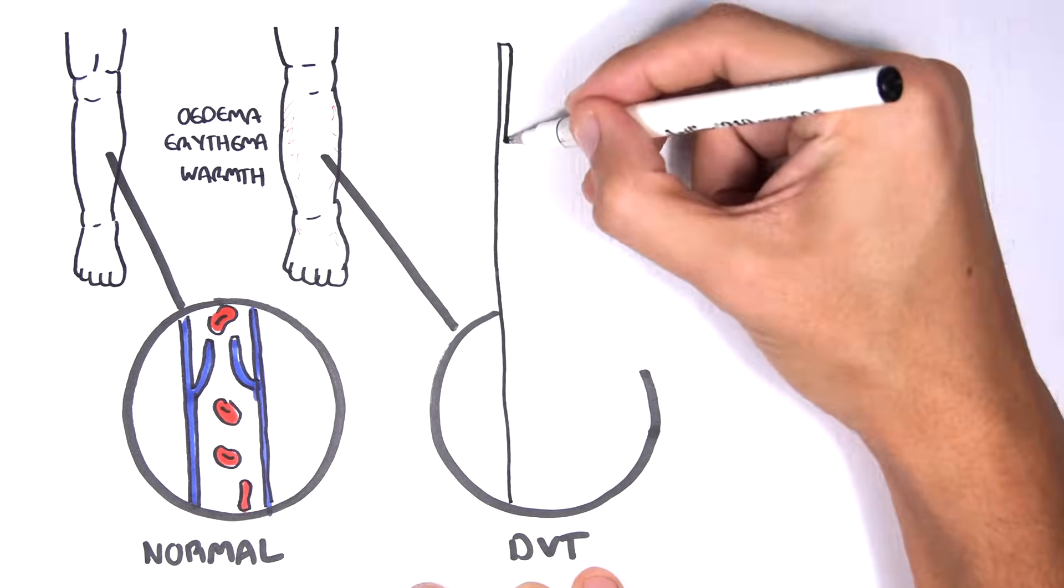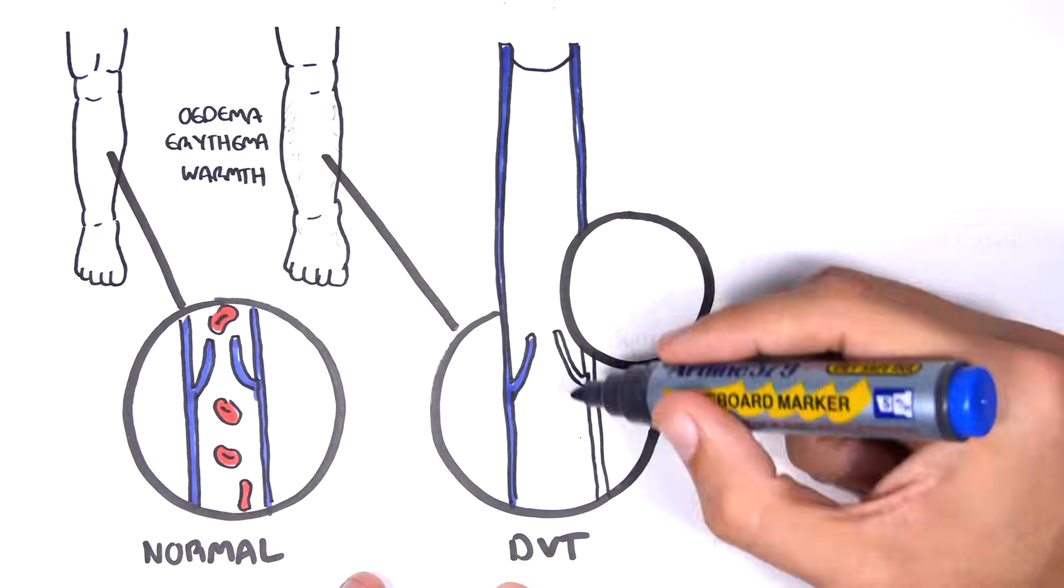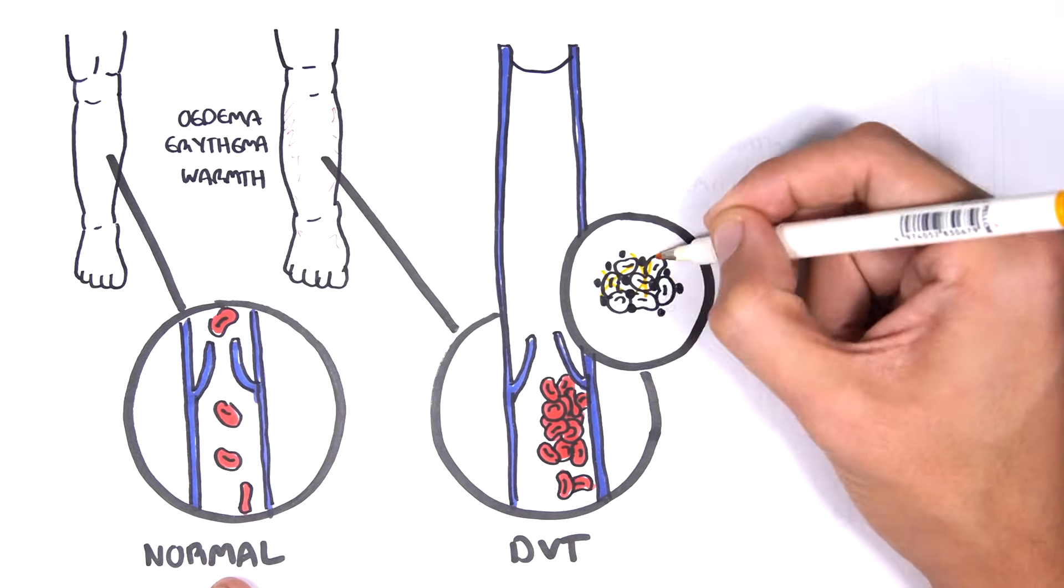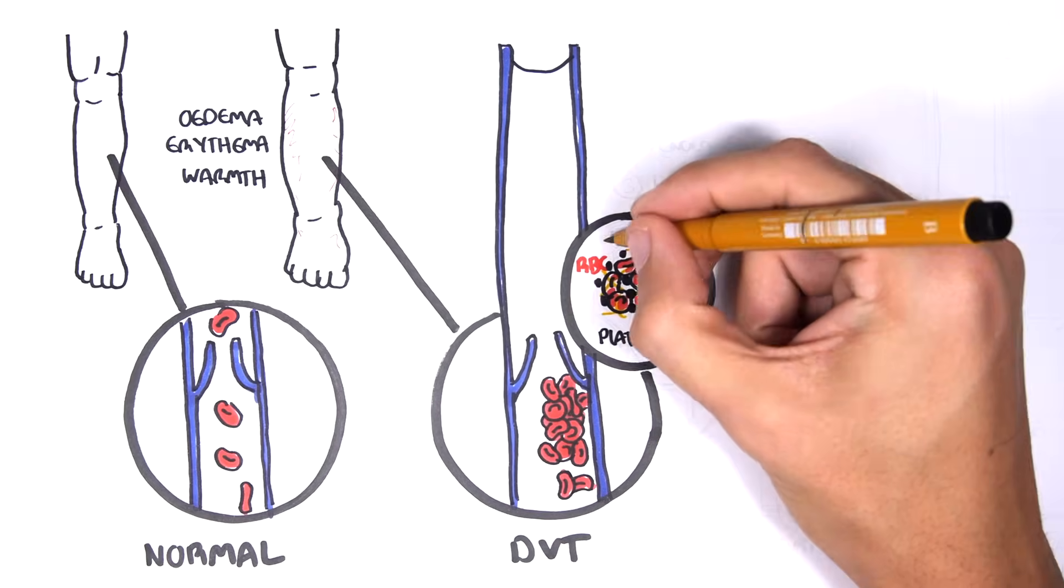In deep vein thrombosis, there is thrombus occurring within these veins of the leg, the lower legs usually. And so clotting is occurring. A thrombus is made up of a network of fibrin mesh, platelets, and red blood cells.